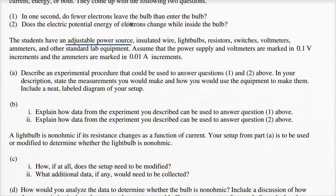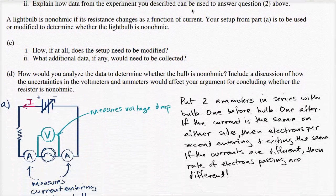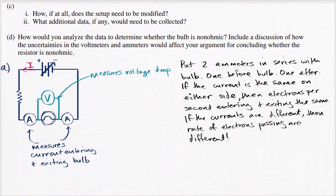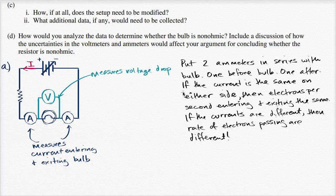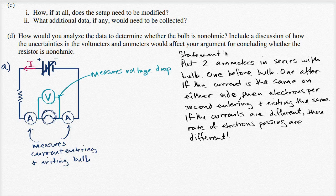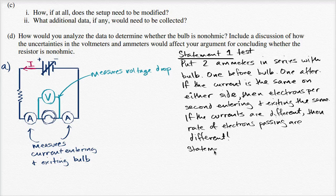That procedure addresses statement one: in one second, do fewer electrons leave the bulb than enter? If the ammeters measure the same current, the same number of electrons per second enter and leave. If they measure different currents, different numbers of electrons are passing. Now for statement two, place a voltmeter in parallel with the bulb.